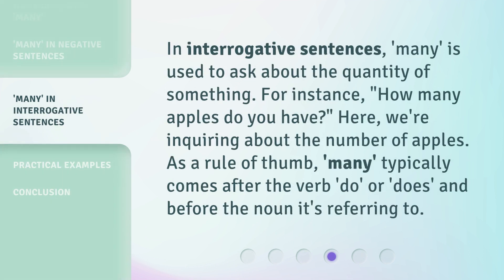In interrogative sentences, 'many' is used to ask about the quantity of something. For instance, 'How many apples do you have?' Here, we're inquiring about the number of apples. As a rule of thumb, 'many' typically comes after the verb 'do' or 'does,' and before the noun it's referring to.